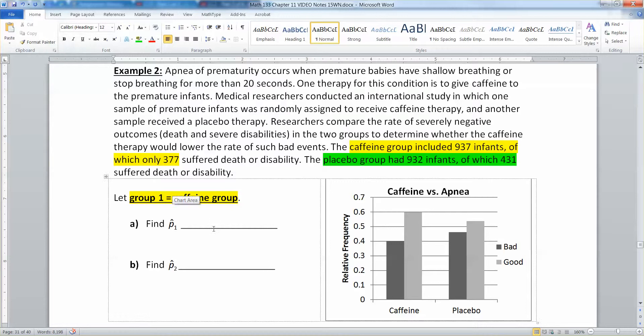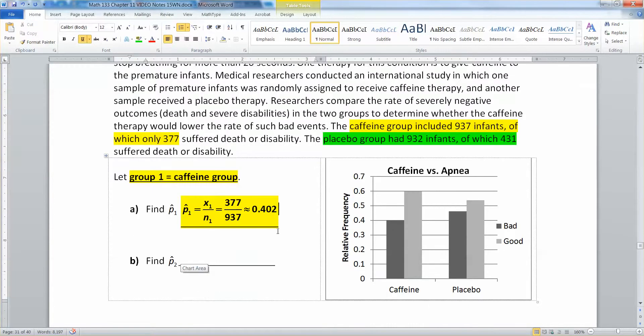The placebo group is group two, and that'll be the 932 infants of which 431 suffered death or disability. So P1 hat is 377 divided by 937, which is 0.402 approximately. And P2 hat is 431 over 932, which would be 0.462.